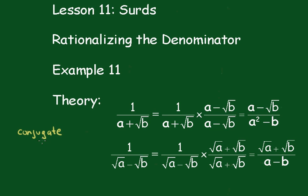Just helps you remember what to do. So if a plus root b and a minus root b, then a minus root b is the conjugate of a plus root b and vice versa. You just change the sign here.